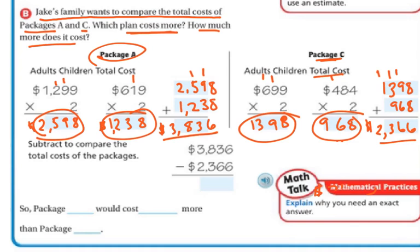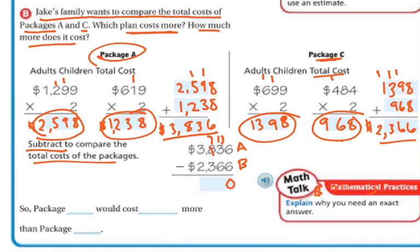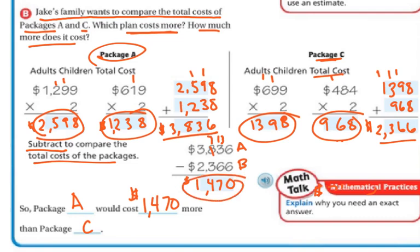To compare the two packages and find the difference, I'm going to subtract the total cost of both packages. We have 6 minus 6 which is 0. I can't take 6 from 3 in the tens, so I regroup the hundreds — leaving 7 hundreds — and add that to the tens, giving 13 minus 6 which is 7. Then 7 minus 3 is 4, and 3 minus 2 is 1. So package A costs $1,470 more than package C.